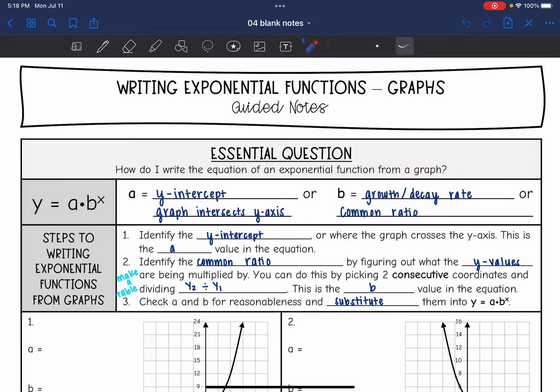So let's talk about how to identify these things in order to write exponential functions from graphs. The first thing you're going to do is identify that y-intercept or where the graph crosses the y-axis. This is the a value in the equation. And then this is probably the most complicated part, just because you have to pay really close attention to the details.